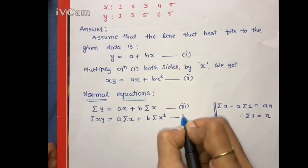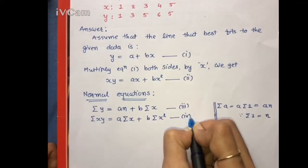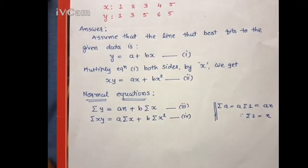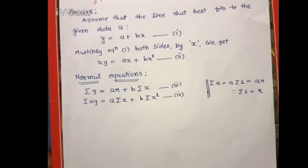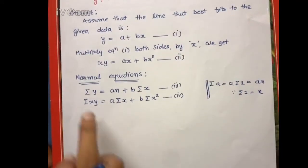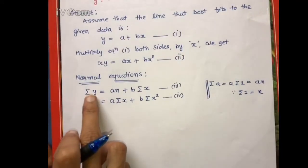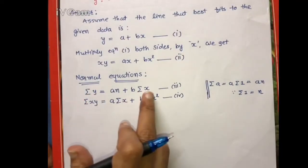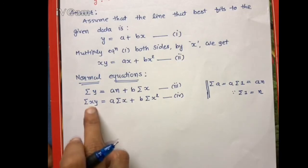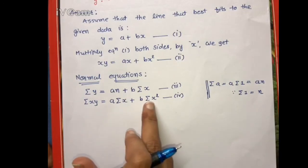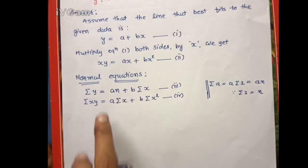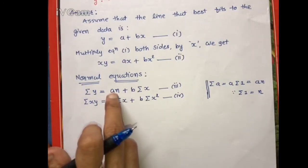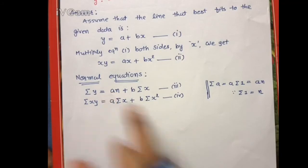You can do the numbering as per your convenience. Now we need to find all the required values: Σy, Σx, Σxy, Σx², and n, where n is the number of observations. Since we have x data as 1, 2, 3, 4, 5, we have 5 data points, so n = 5.